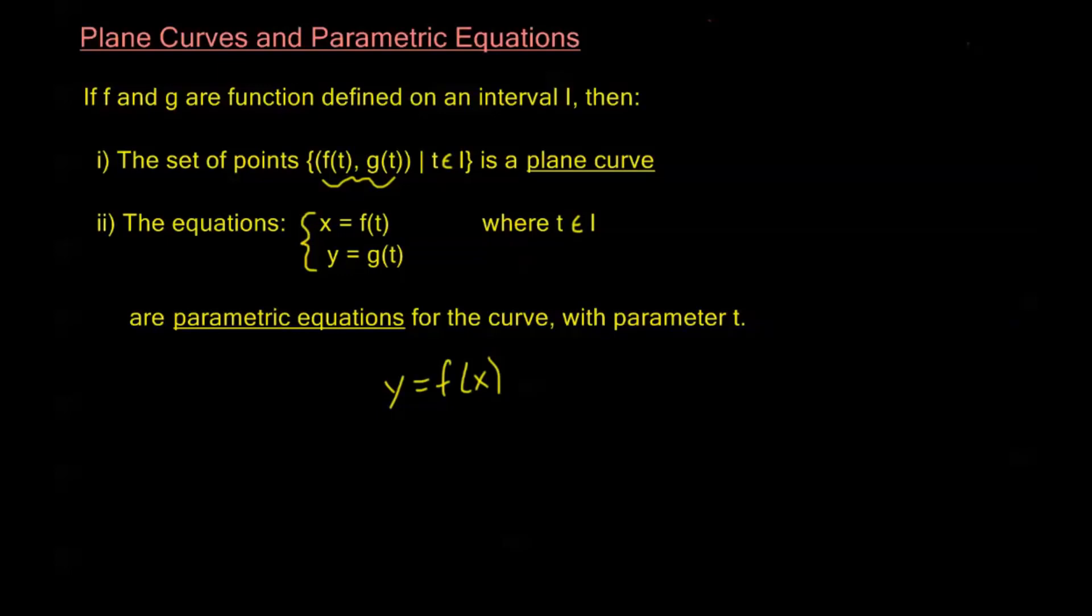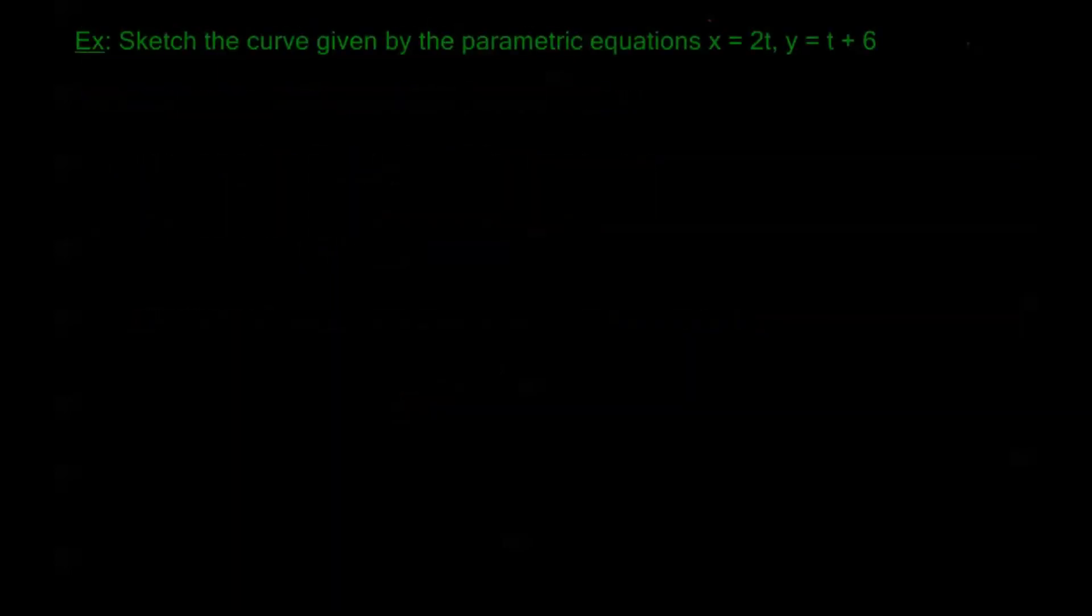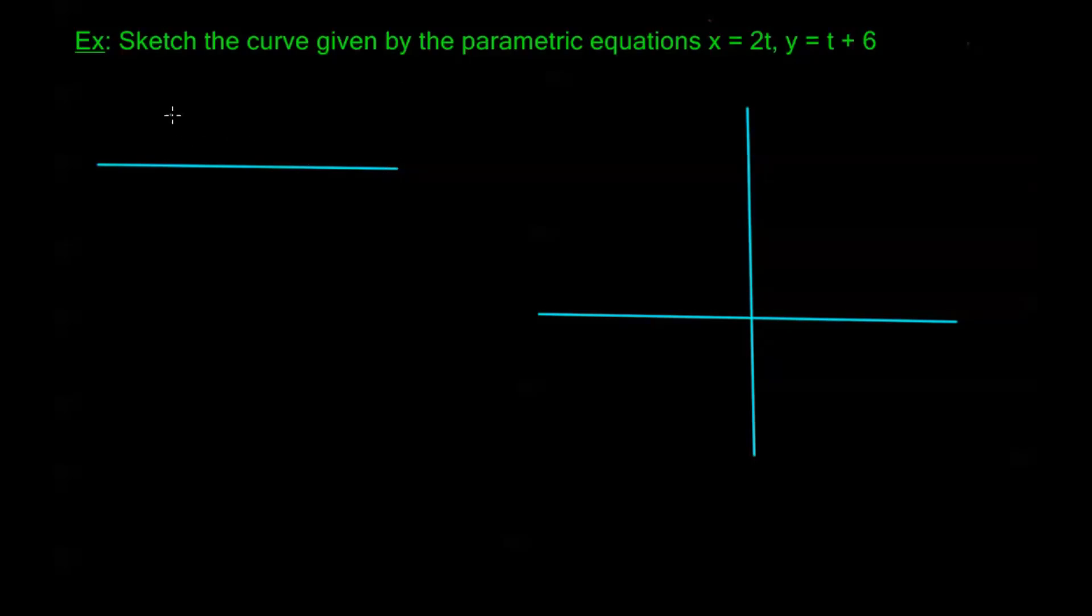So let's take a look at a simple example of a parametric equation. Let's say we're asked to sketch the curve given by the parametric equations x equals 2t and y equals t plus 6. So we're going to need to sketch this curve, so I'll go ahead and draw a little axis here. Now, we haven't learned much about parametric equations yet, so to sketch this curve, we're going to draw a table. And we're going to find what some of these points are, x and y, as our t changes.